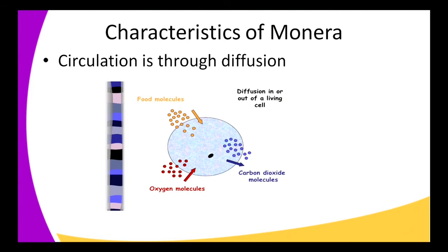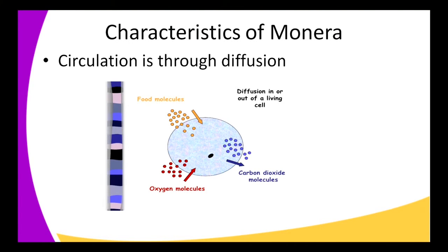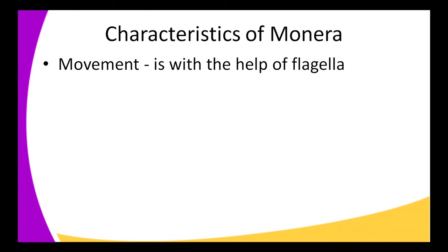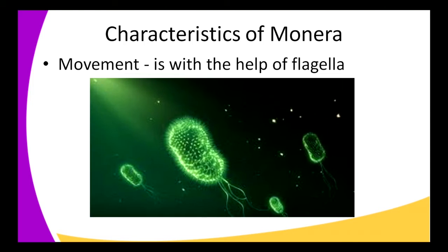How do these organisms circulate their materials? Bacteria use diffusion. Since they are unicellular, they can easily diffuse materials in and out of their cells. If they need oxygen, it diffuses into the cell, and the by-product carbon dioxide is easily removed by diffusion. That is how they circulate the materials they need in their bodies.